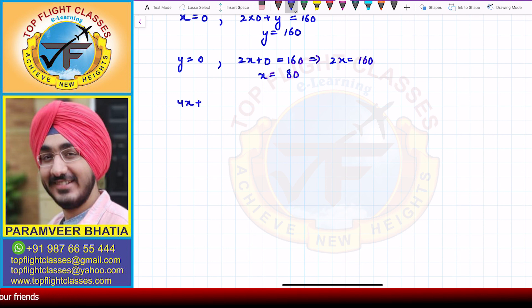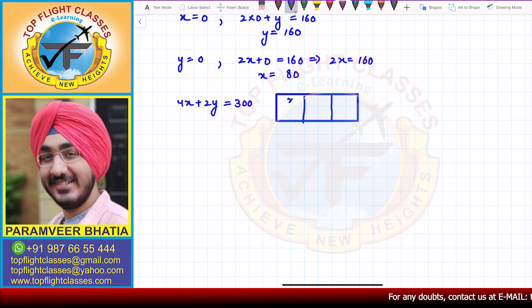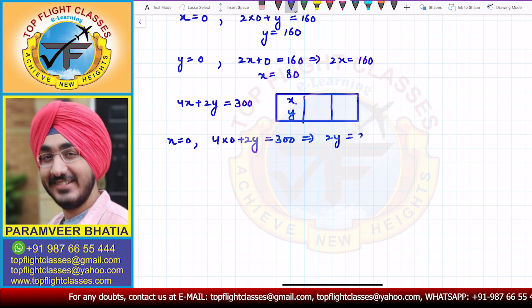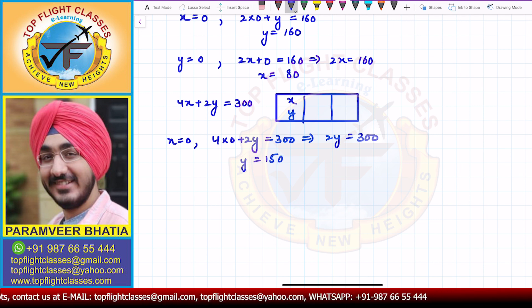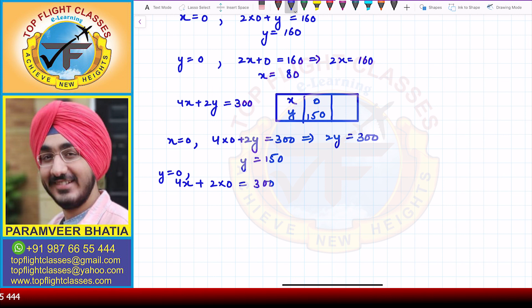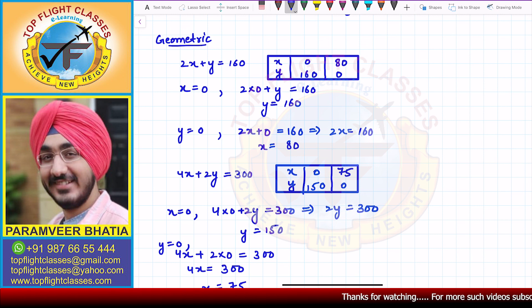For the second equation 4x plus 2y equals 300, putting x equal to 0 gives 2y equals 300, so y equals 150 — giving point (0, 150). Putting y equal to 0 gives 4x equals 300, so x equals 75 — giving point (75, 0).